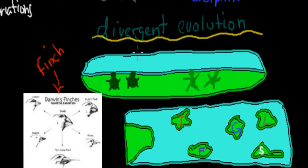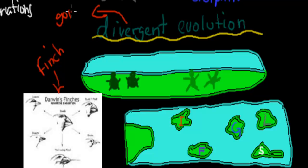Convergent comes from the word 'converge,' meaning coming together — different species that are quite far apart genetically come together in terms of their adaptations and appearance, because they face the same selective pressures. Now, divergent evolution means going apart.